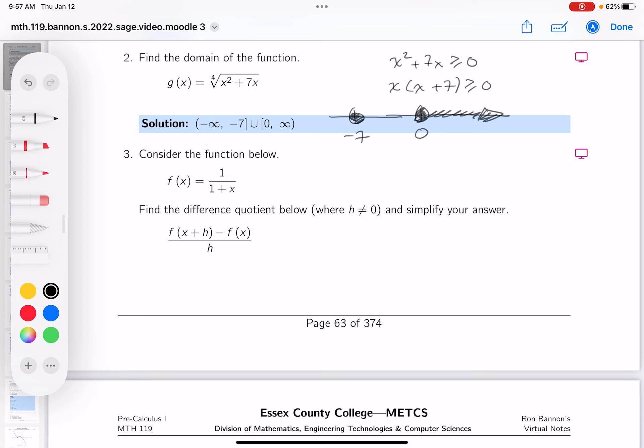If you took a number between minus seven and zero, like minus one, and plugged it in, you would get a negative number, and negative numbers are not greater than zero.